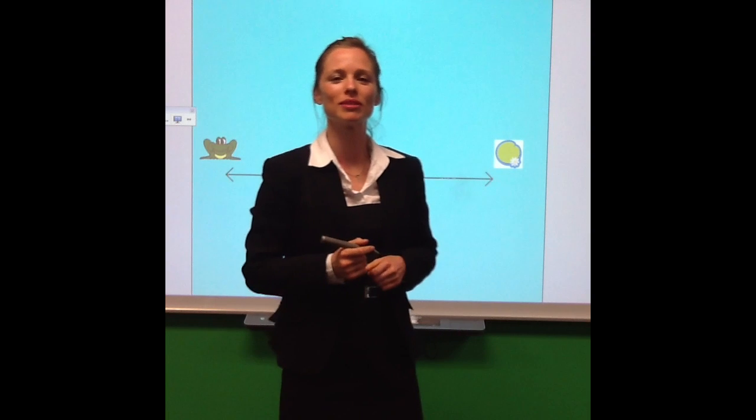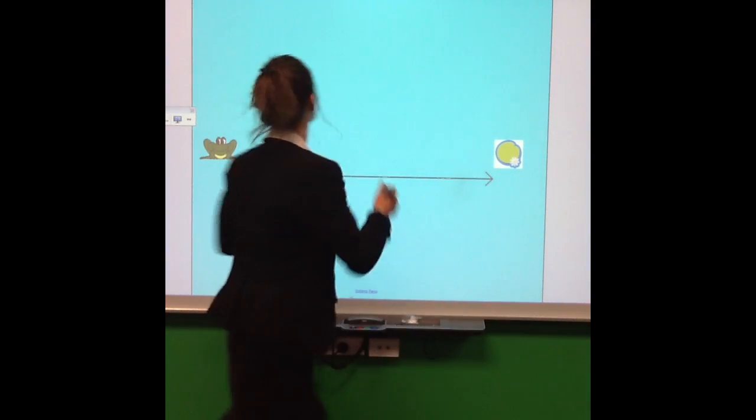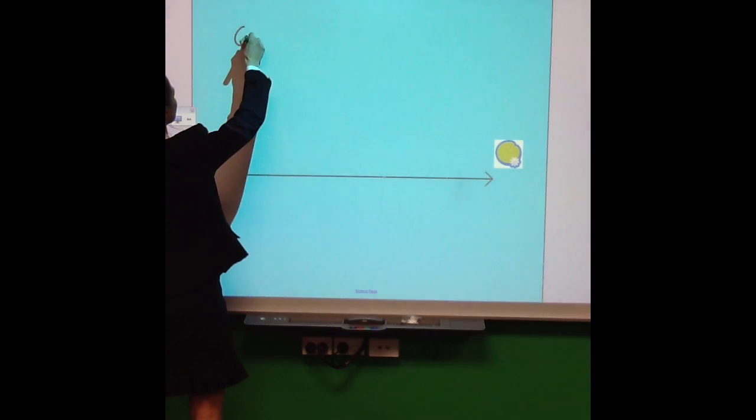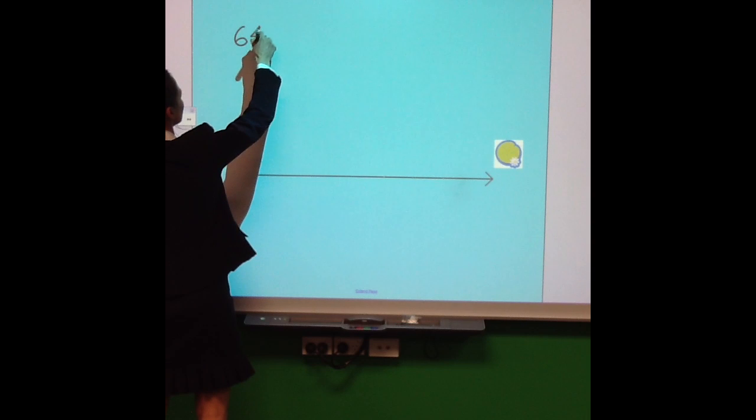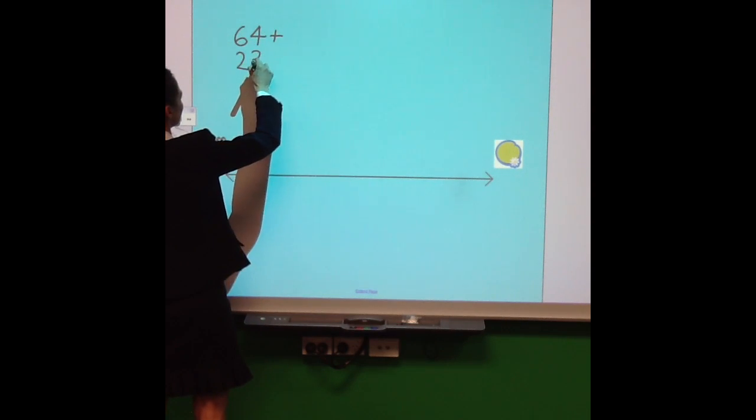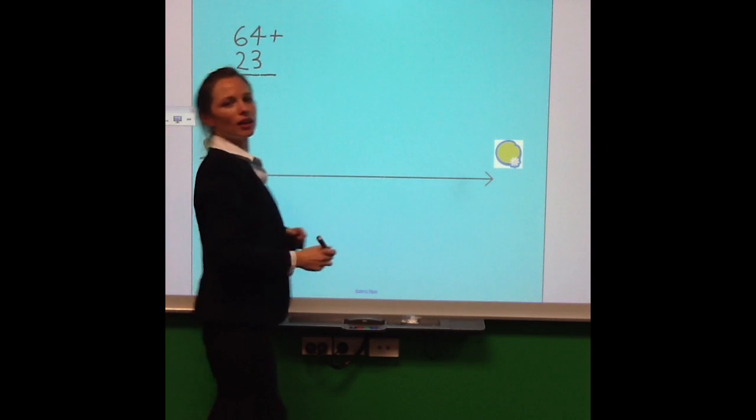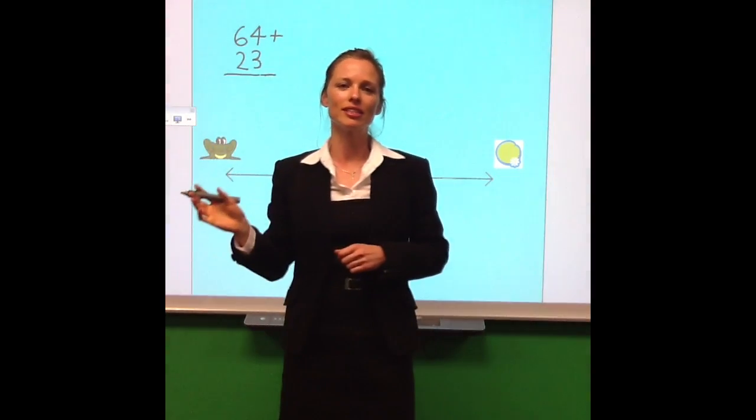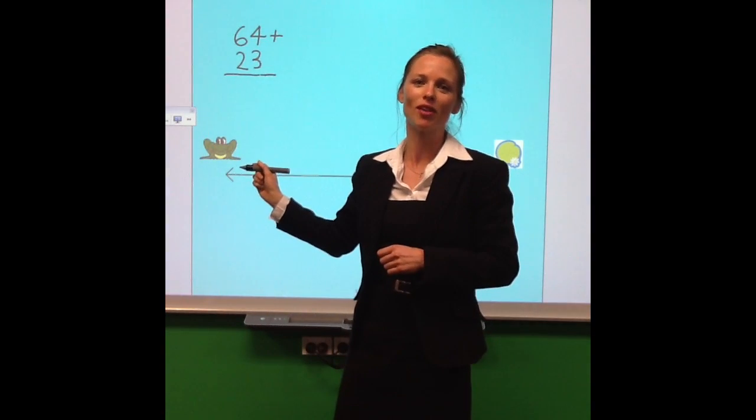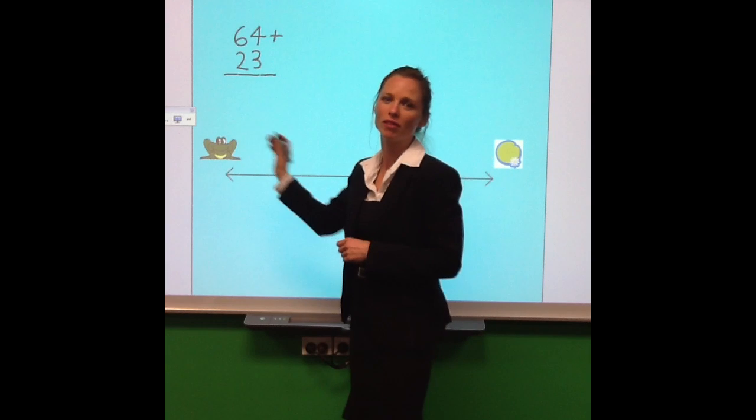Okay, let's say we're starting with the sum 64 plus 23. We look at our bigger number there, the 64, and that's our starting point on the number line. So I'll just plot that now on the far left.